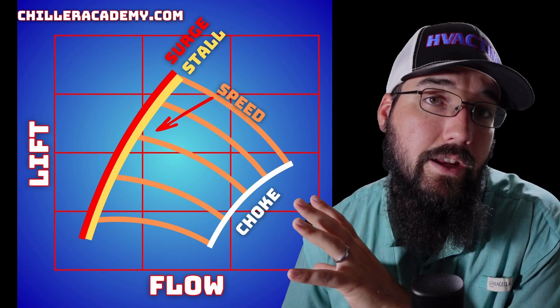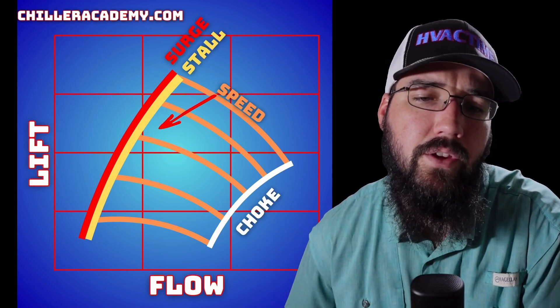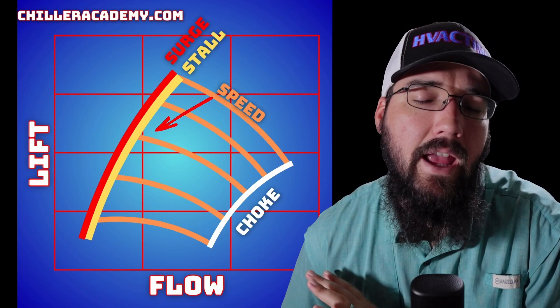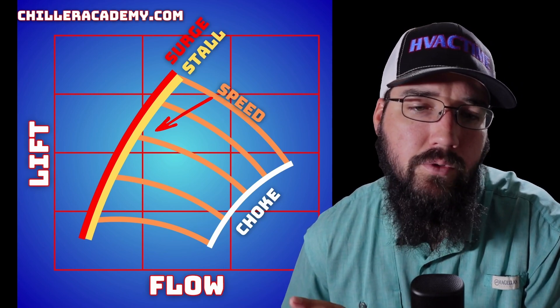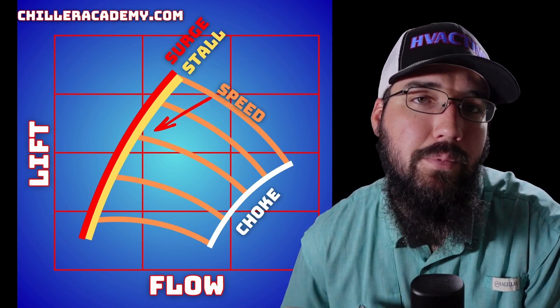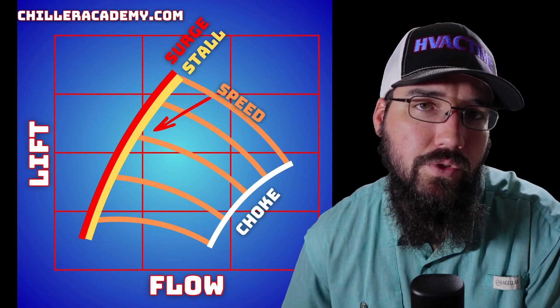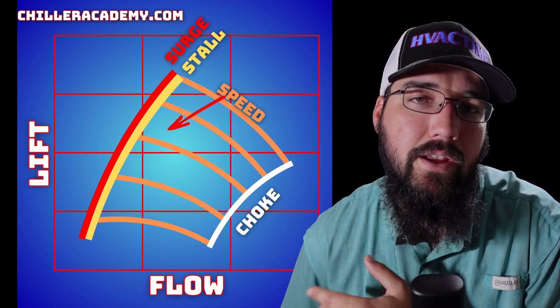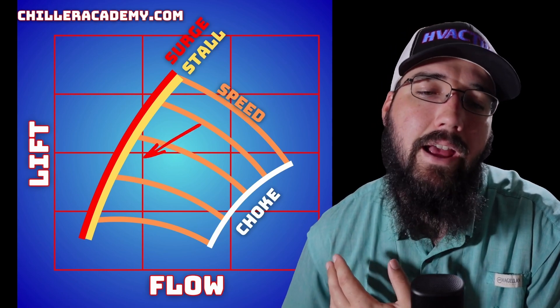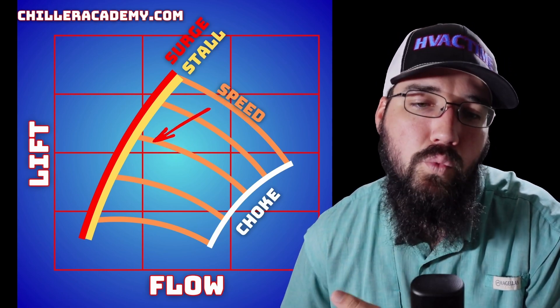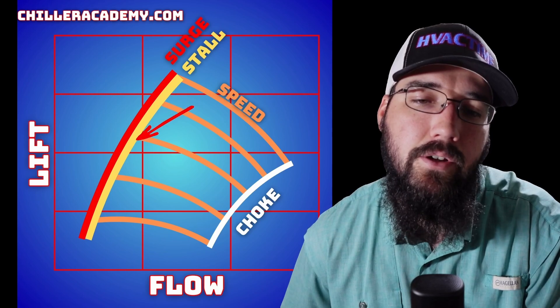Just some things to think about. This is something to ponder on as a concept. Every compressor will have its own graph like this—this is just a general representation of what that graph will resemble and look like. Your control systems have a graph like this programmed into them that, as it's controlling the staging and loading of the compressor, it knows where it's at in relation to these lines.